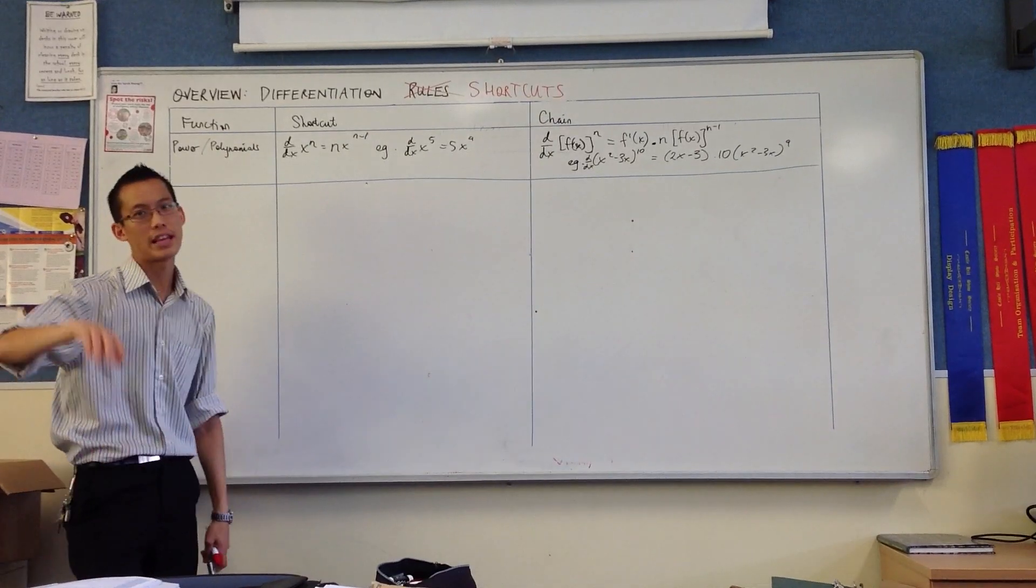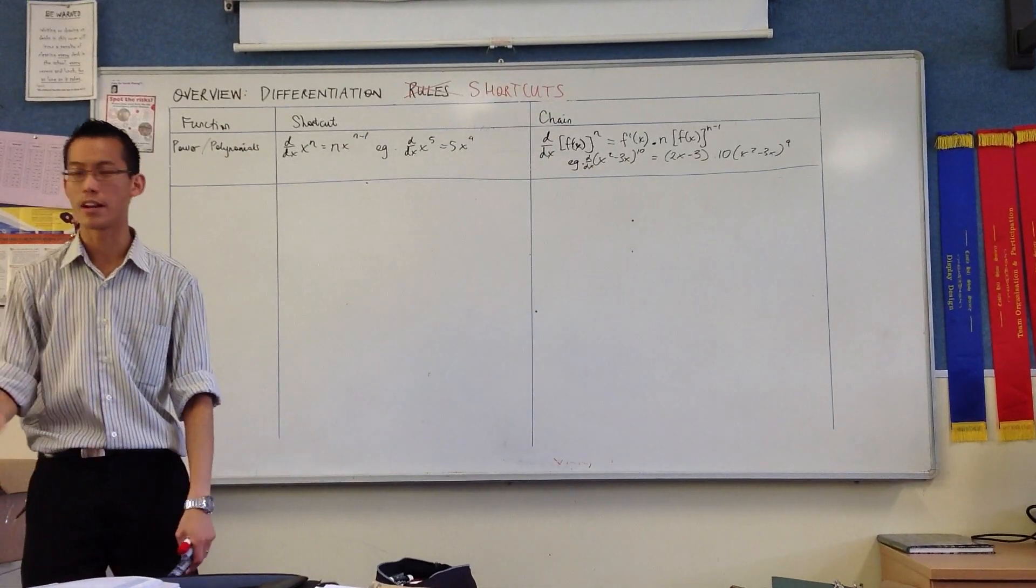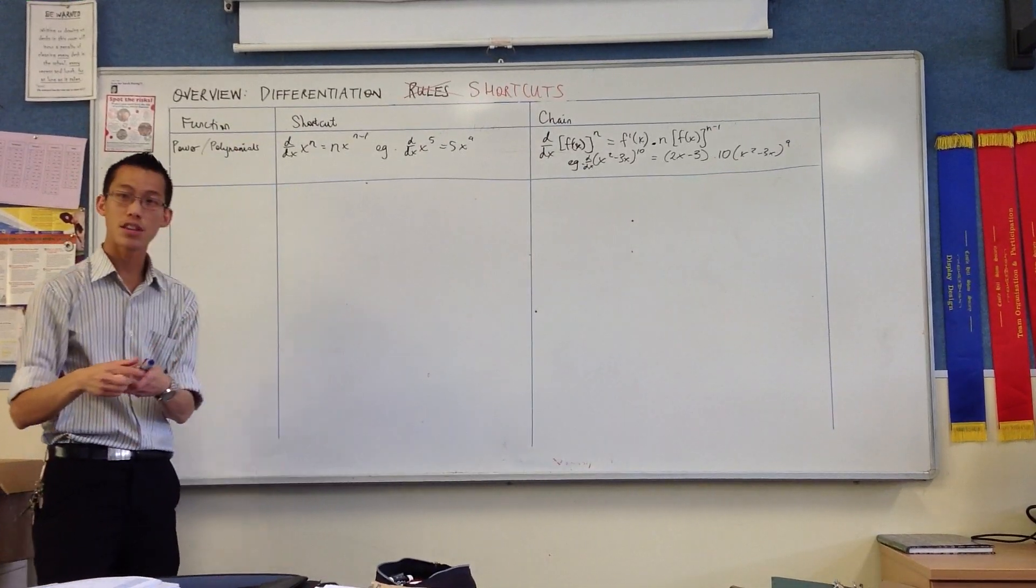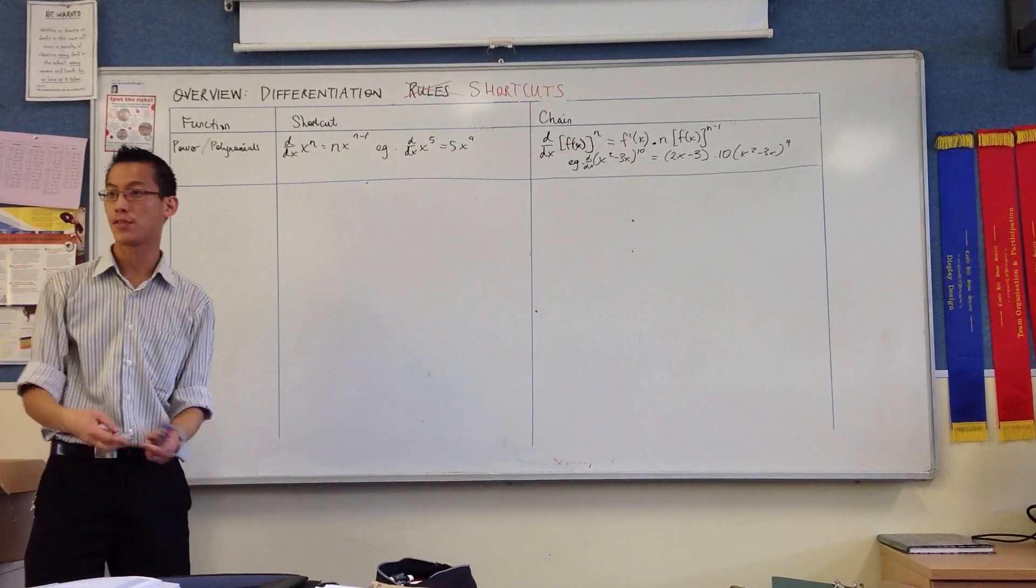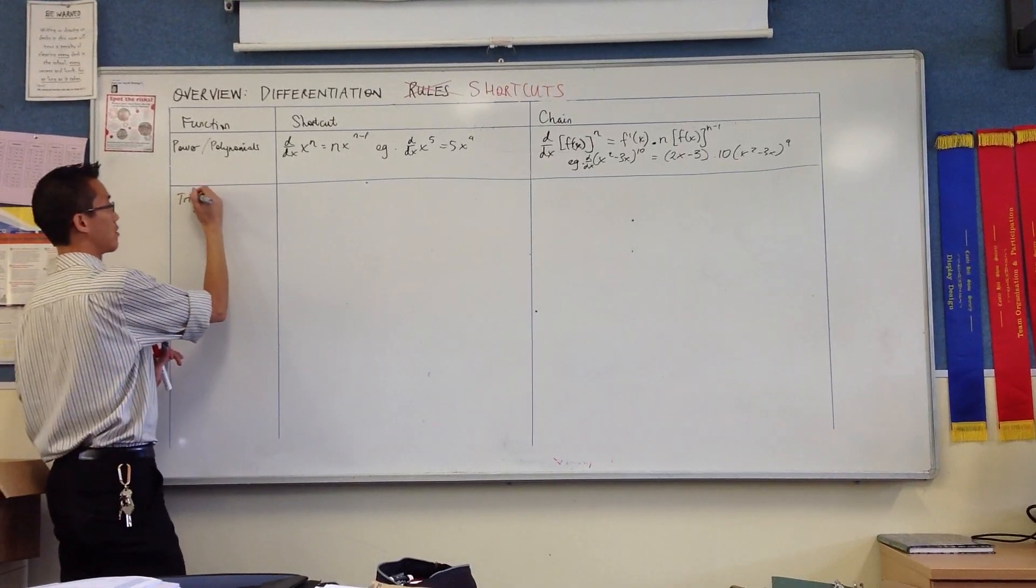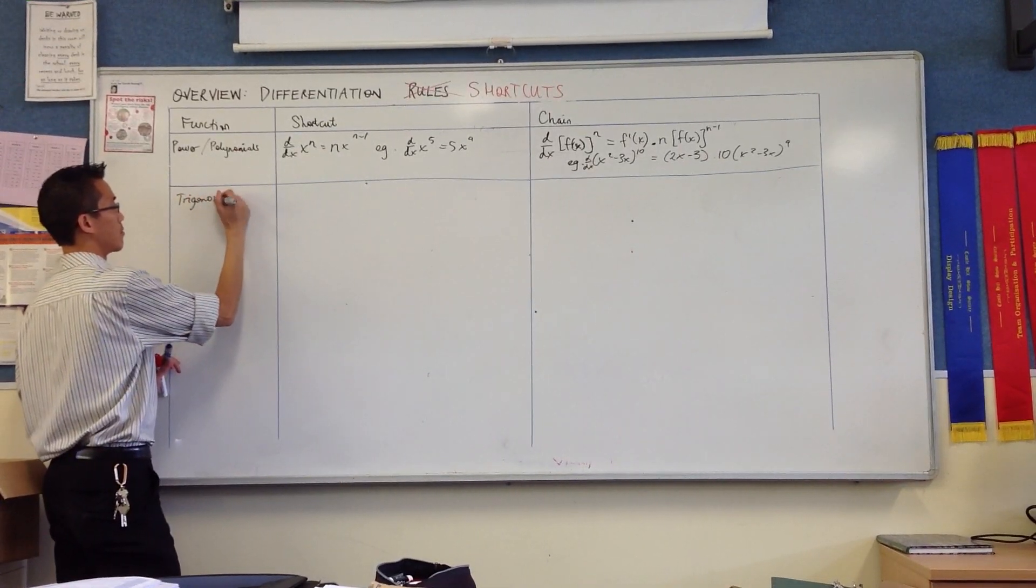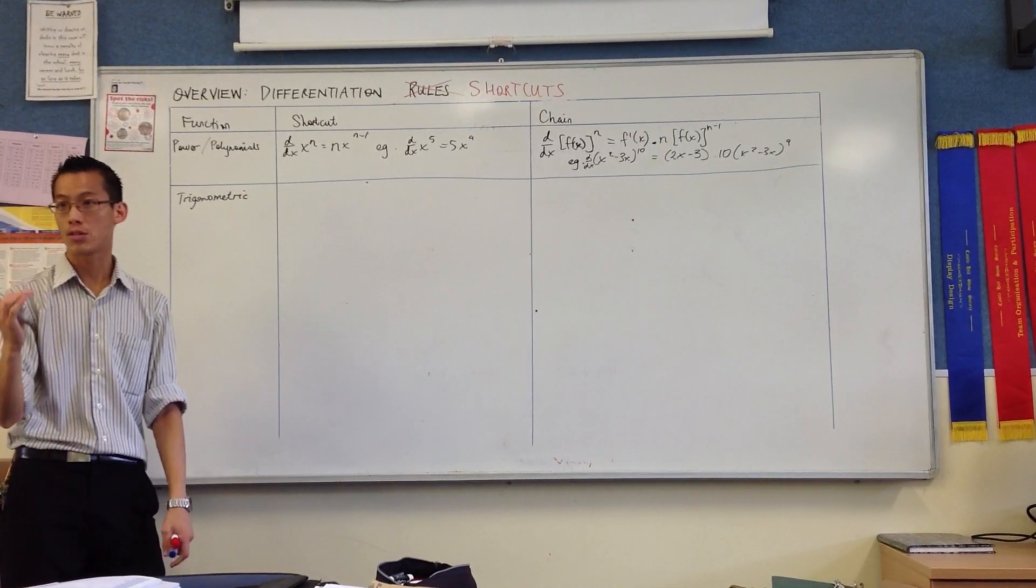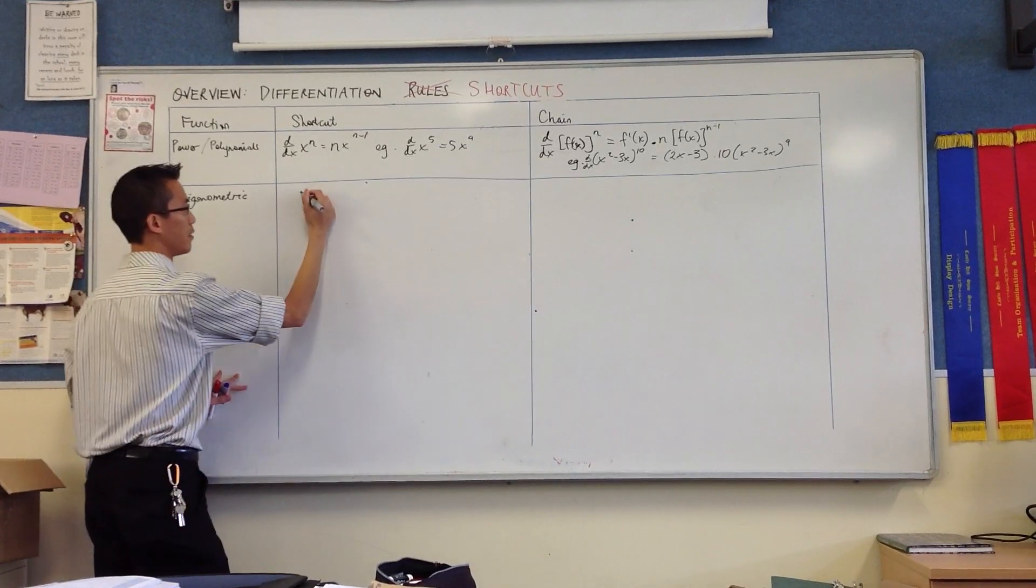Now after this we learned product rule and quotient rule, that kind of thing. I'm not really going to include that here because they're not different kinds of functions. So the next kind of family of different things we learned to differentiate was trig, trig and inverse trig. So there's three basic trig functions.